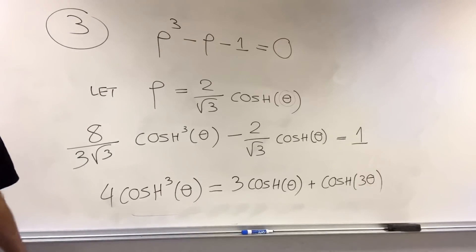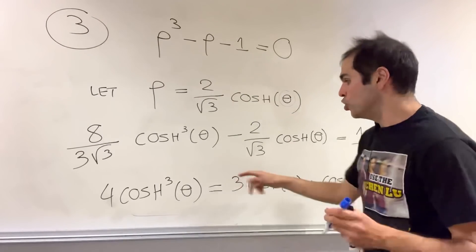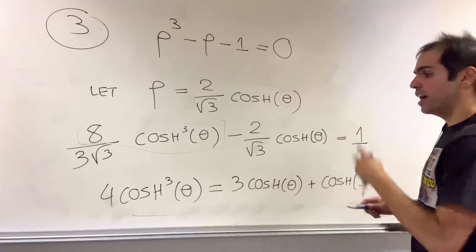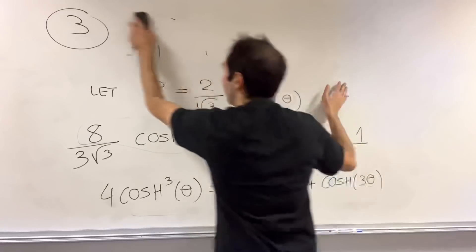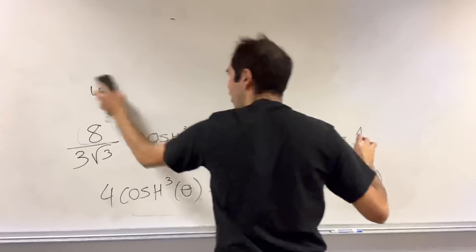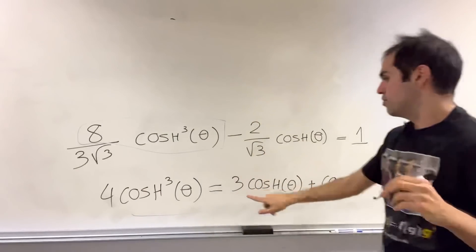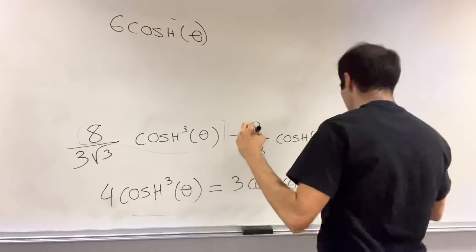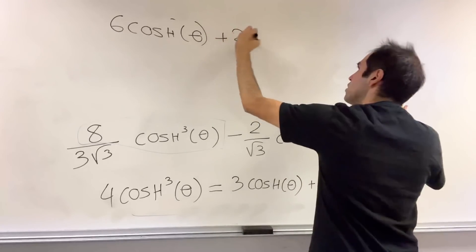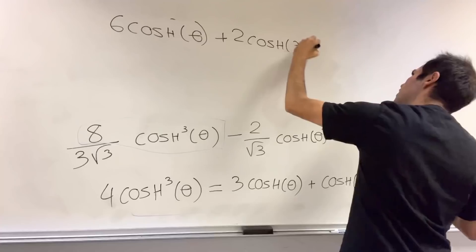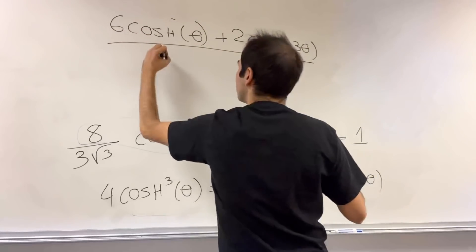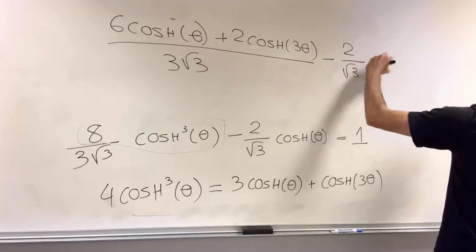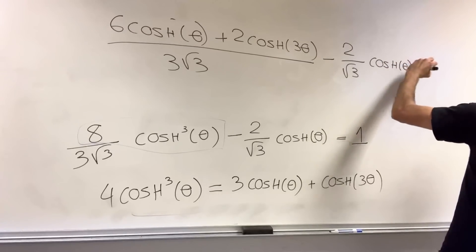And which is quite nice, because notice, cosh cubed appears in this expression. Eight cosh cubed is the same thing as two times four cosh cubed. And therefore, the formula now simplifies to the following. So two times three, so six cosh of theta plus two times cosh of three theta, and again divided by this square root, so three square root of three minus two over square root of three, cosh of theta equals one.